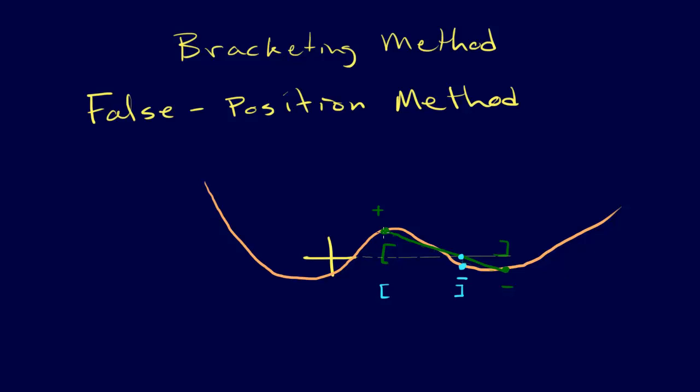We already have the function evaluated here. We evaluate the function here. And we see where the line going straight between those two points intersects with the axis. So we project that up, we get this point here. It evaluates to be positive, and so our new bracket is here, which is actually rather tight.